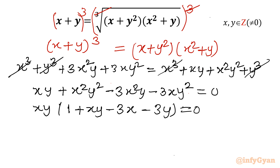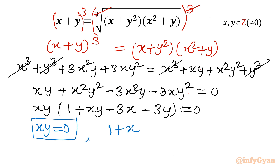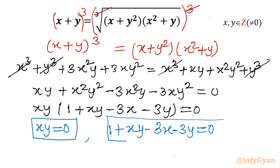Now conclusion time: f · g = 0 means either f = 0 or g = 0. So either xy = 0 or the bracket (1 + xy − 3x − 3y) = 0. We will solve both equations for non-zero integer solutions. The important point is that we need integer but non-zero values.